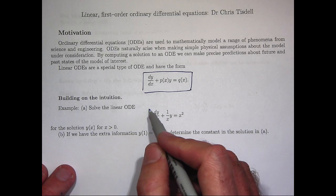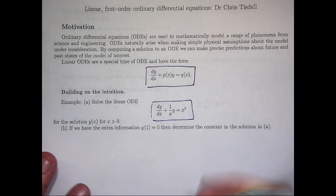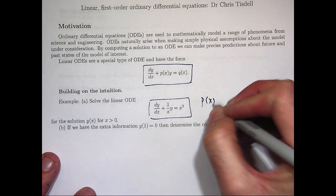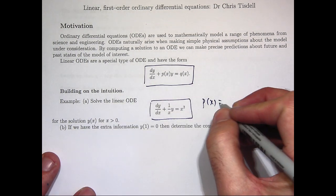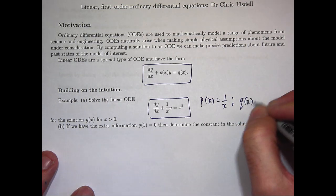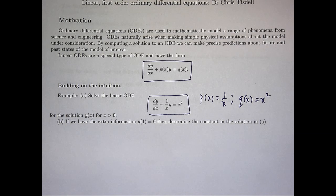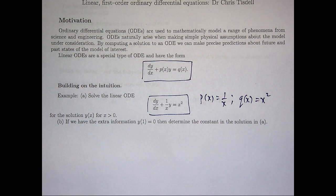Let me show you what I mean using this specific example. We're asked to solve this linear ODE. Here, p(x), the coefficient function, would be 1/x. The q(x) would be x squared. So what I'm going to do is make that left-hand side the derivative of a special product involving the unknown function y and the integrating factor.